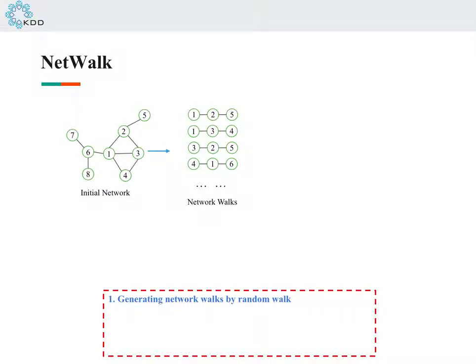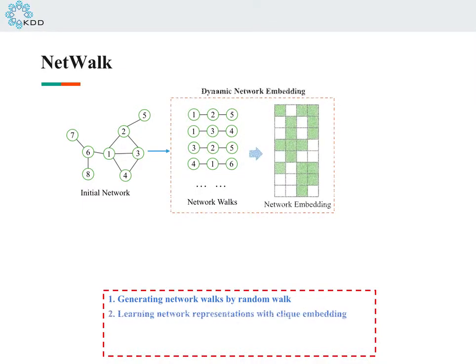This figure shows an illustrative diagram of the anomaly detection pipeline in dynamic networks. First, we learn the latent network representations by using a number of walks extracted from this initial network, and then the representations are obtained via clique embedding, which we will talk about in the next slide.